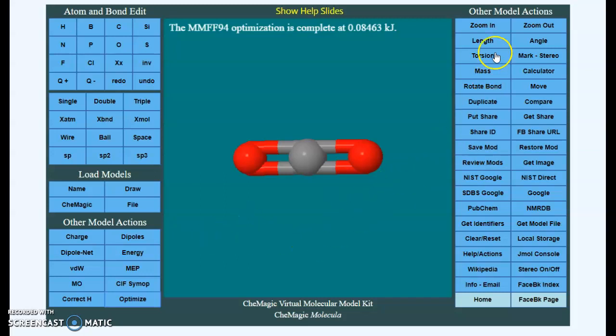If you want to measure bond lengths, you click on length and you click on any two atoms. So you can click on the carbon and the oxygen and it will measure the bond length. You may have more than one bond length that you need to measure, and so you can measure any bond length that you want.